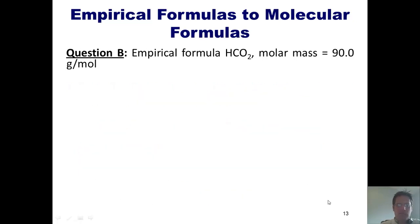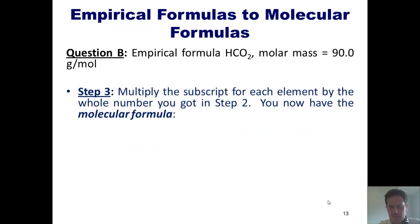Step three, multiply the subscript for each element by the whole number we got in step two. Here's the original formula we're given. The whole number we got in our last step was two. So I multiply every single subscript by two, and I get H2C2O4. That is the actual molecular formula for this compound.